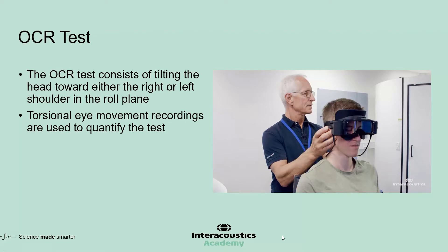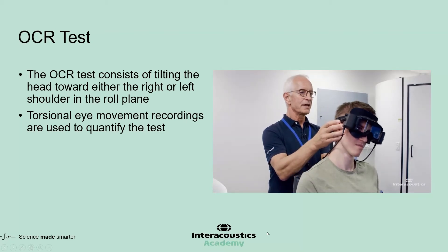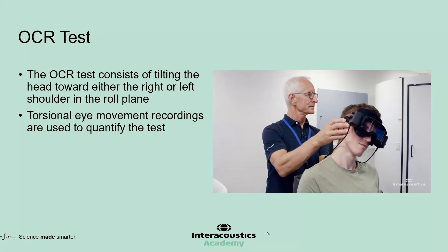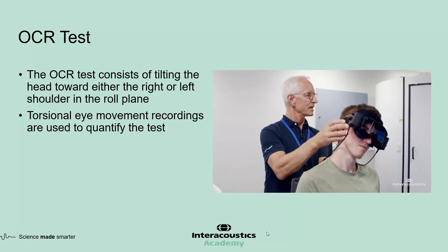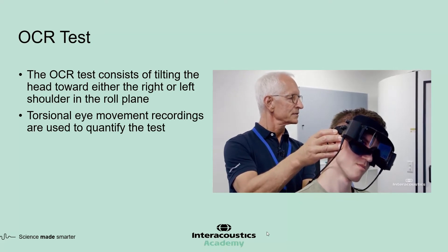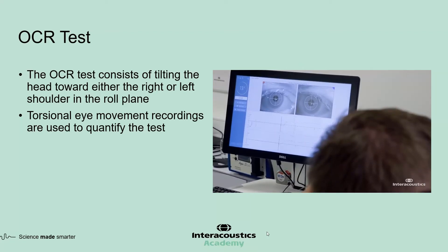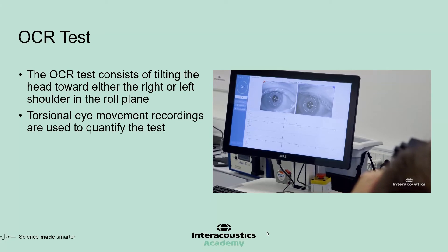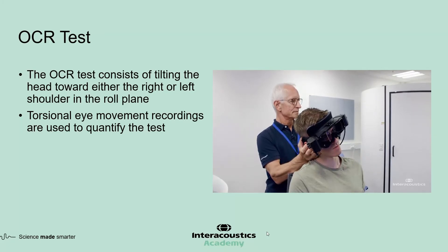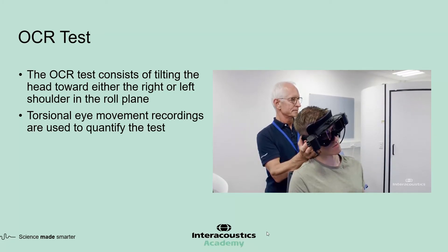Let's talk about other otolith tests that are the focus of this presentation. The ocular counter rolling, or the OCR test, consists of tilting the head toward either the right or left shoulder in the roll plane. As you can see in this video, the head starts upright and then tilted left and held there for several seconds. The head is then returned to the upright position and then tilted to the right. Three-dimensional eye movements, including torsion, are recorded throughout the test.